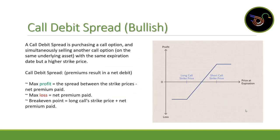First, the call debit spread, which is a bullish strategy. A call debit spread is when you purchase a call option and then sell another call option with the same expiration date but a higher strike price. This results in a net debit — you are paying to open the trade. Max profit is the spread between the strike prices minus the net premium paid. Max loss is that initial premium paid. The breakeven point is the long call strike price plus the initial premium paid.